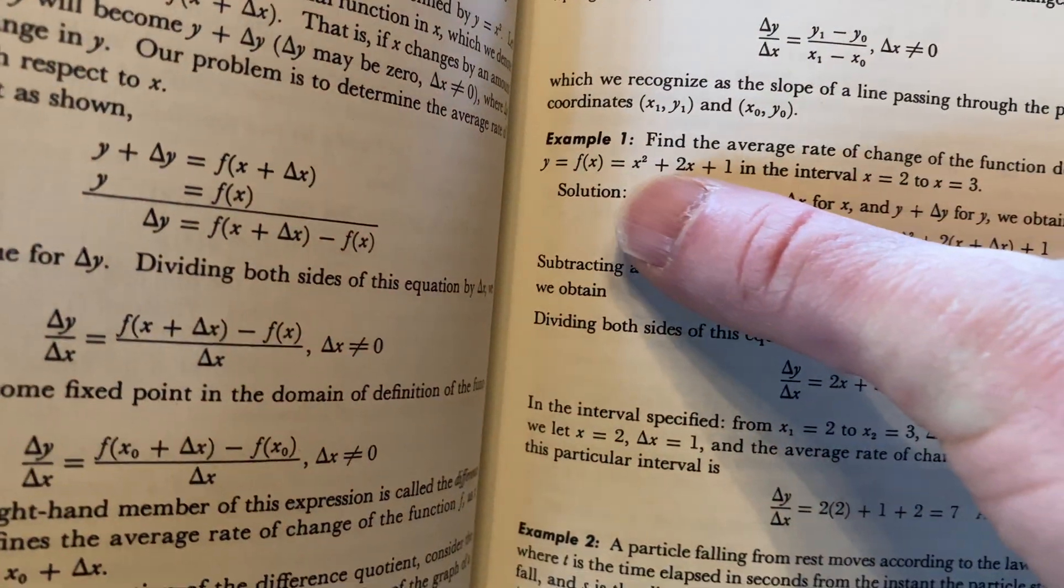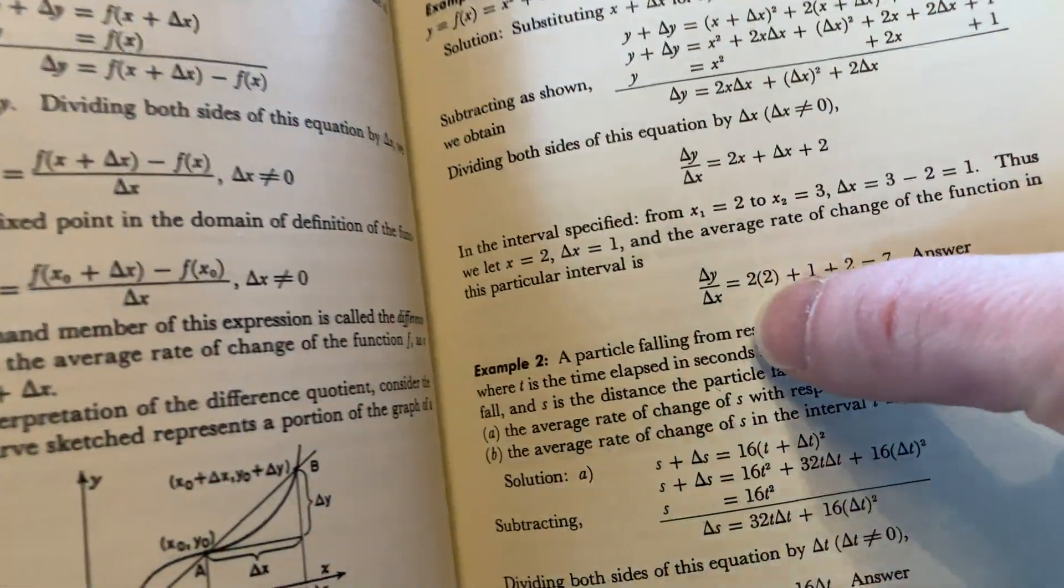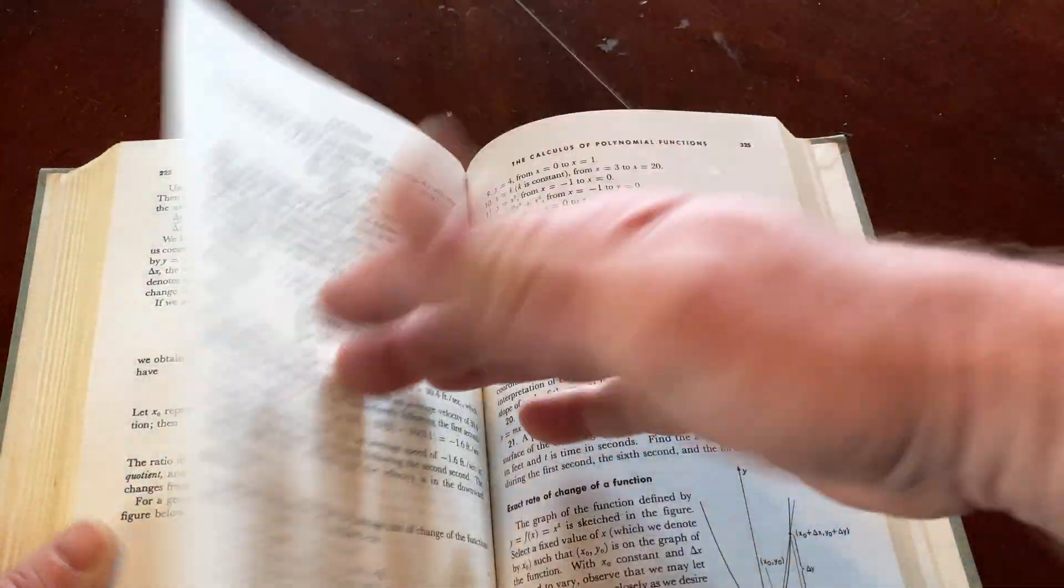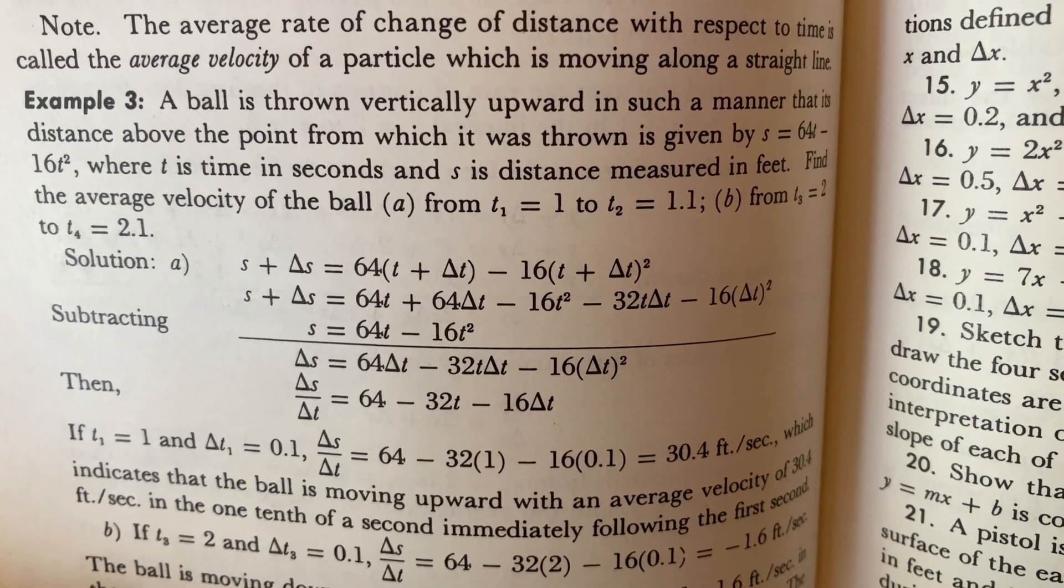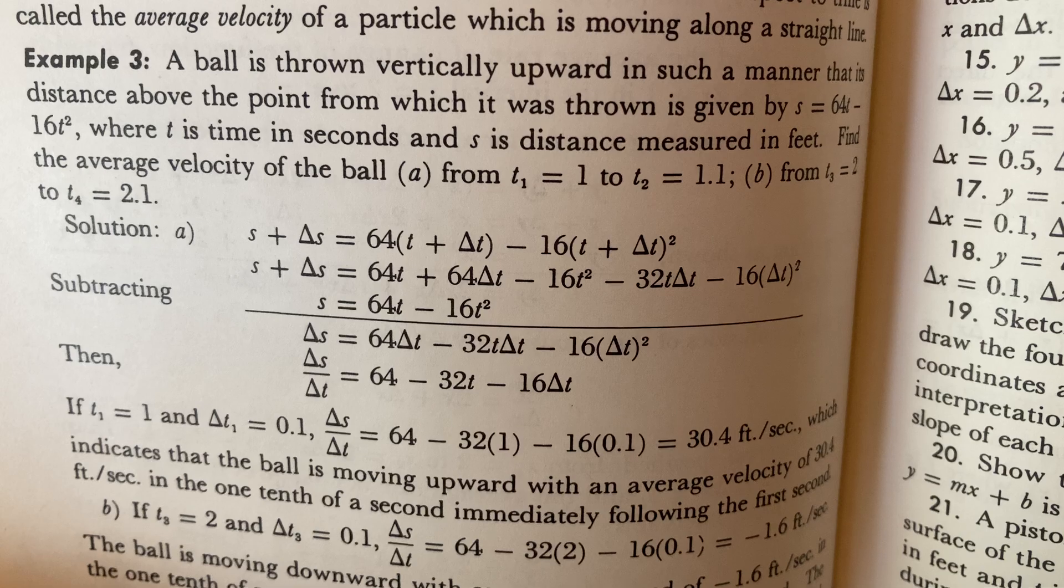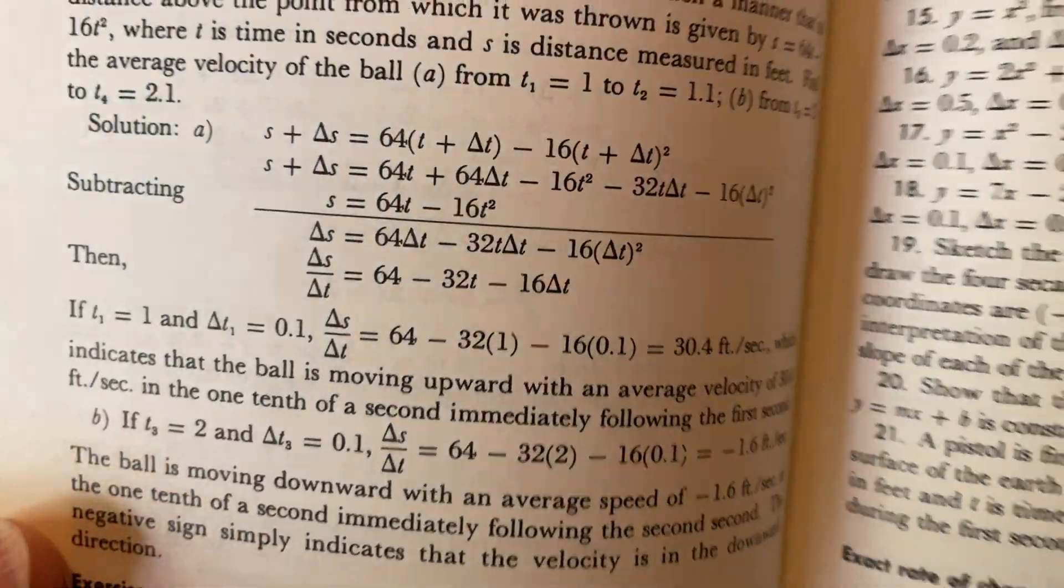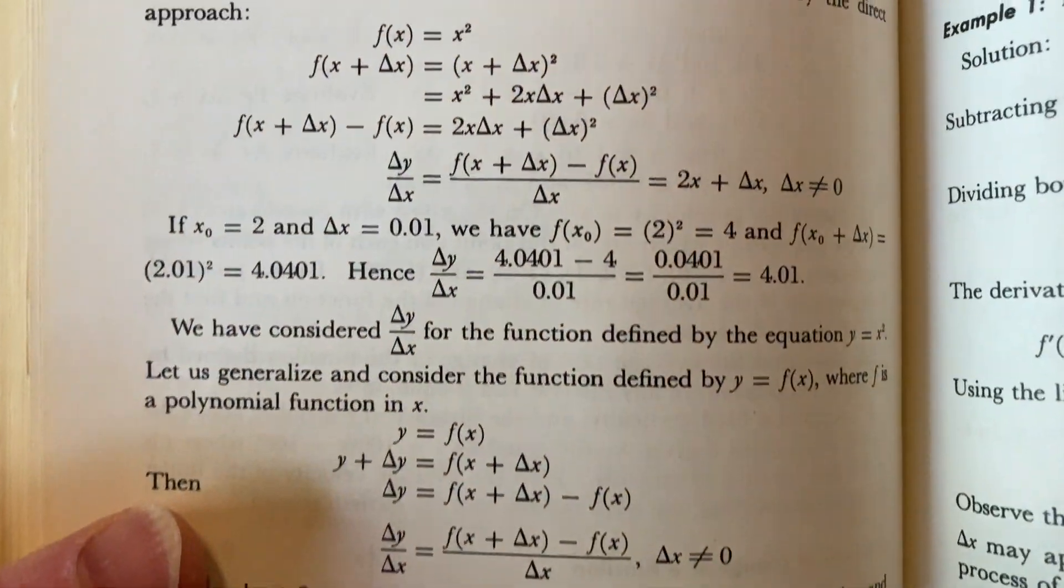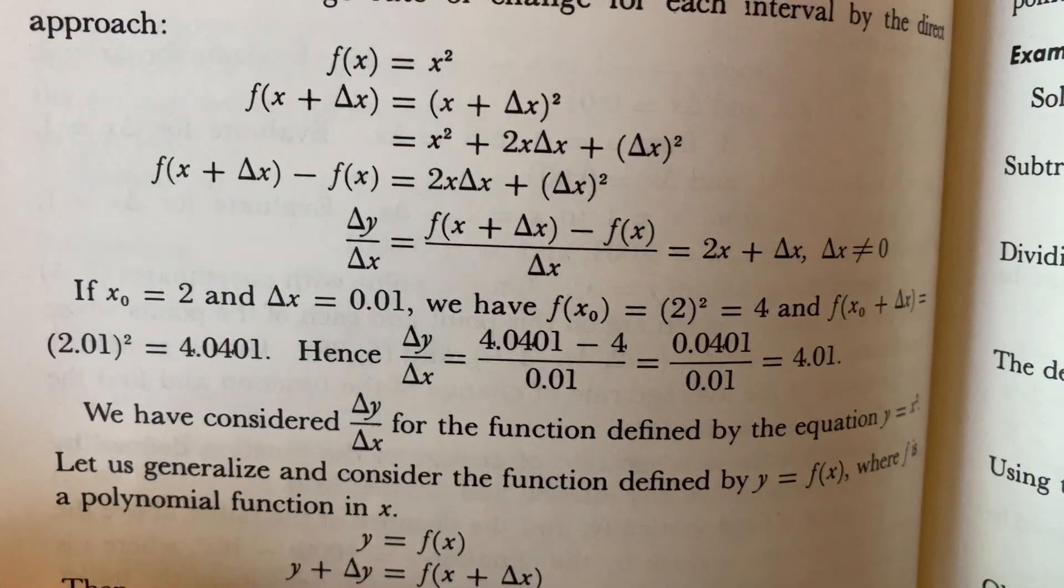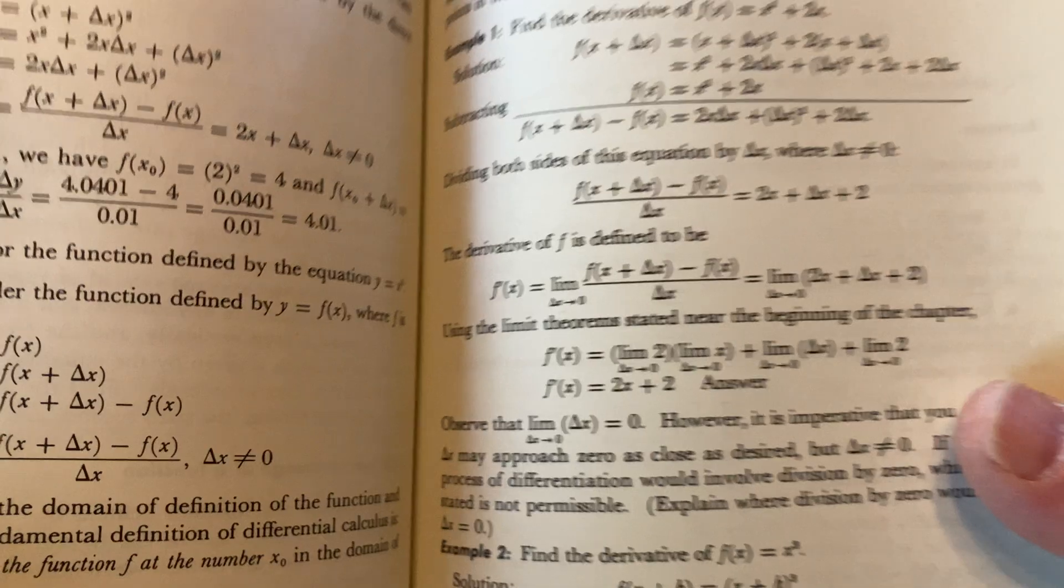Nice. Very nice. Another way to do it is you could just say that same thing. You plug in 3, subtract, plug in 2 and then divide by 3 minus 2. It's the change in y over the change in x. It's an interesting way for them to do it. Here's a word problem. This is probably one that you see in other classes. Yeah, a ball is thrown vertically upward in such a manner that the distance above the point from which it is thrown is given by. So they give you a position function and they want the average velocity which is just the average rate of change of the position function. Pretty cool. Pretty cool stuff.